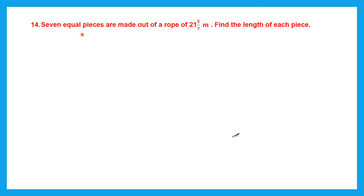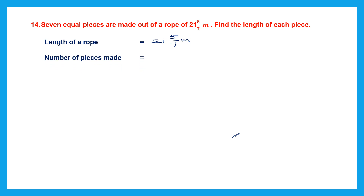Question 14. 7 equal pieces are made out of a rope of 21 and 5 by 7 meters. Find the length of each piece. The length of the rope is 21 and 5 by 7 meters, from which 7 equal pieces have been made. To find the length of each piece we divide 21 and 5 by 7 by 7.